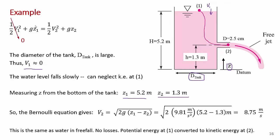And so now we've got z1 and z2. We can solve for V2. And that's what I've done here. I've solved for V2. It equals the square root of 2g times z1 minus z2. And I've made the substitution 2 times 9.81, and the difference in the elevation, 5.2 minus 1.3 meters. And you can see the units balance. We have meters squared per second squared. Square rooted gives you 8.75 meters per second.